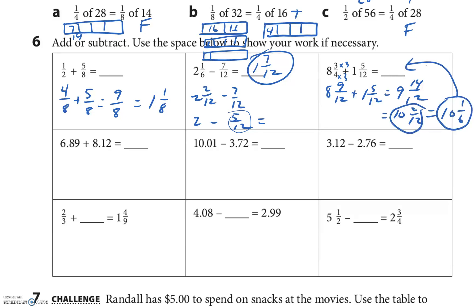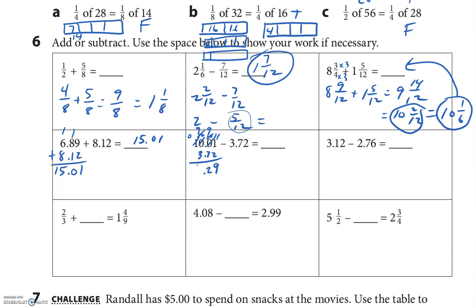Six and eighty-nine hundredths plus eight and twelve hundredths: the biggest thing here — always line up the decimals, line up the place values, hundreds with hundreds, tens with tens, ones with ones, then just add. Nine plus two is eleven, carry the one — that looks like ten, bring the decimal down — carry the one, fourteen plus one is fifteen. Answer: fifteen and one hundredth. Same thing for the subtraction — line up place values, lots of borrowing. Borrow: that's a nine, that's a ten now, becomes a nine, this is eleven. Eleven minus two is nine, nine minus seven is two, bring the decimal down, nine minus three is six. Answer: six and twenty hundredths.